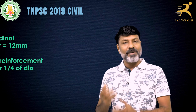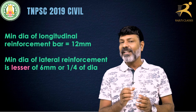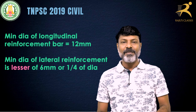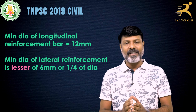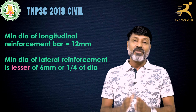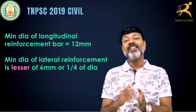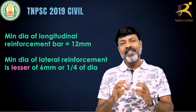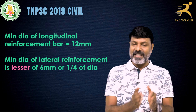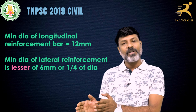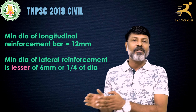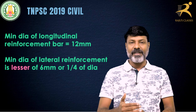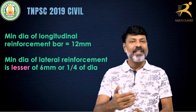Let's look at the minimum diameter of the longitudinal reinforcement bar. In longitudinal reinforcement, the minimum diameter is 12 mm as per IS standard. For lateral reinforcement, the minimum diameter is 6 mm or one-fourth of the diameter of the main bar, whichever is greater.